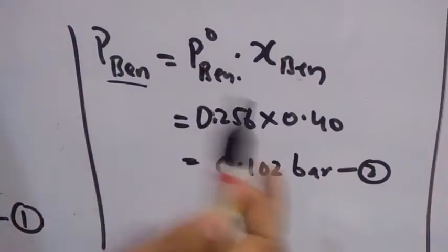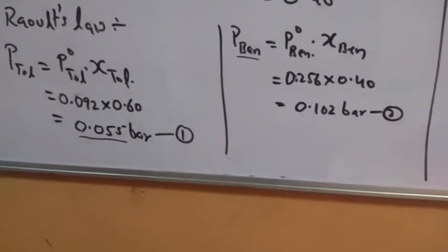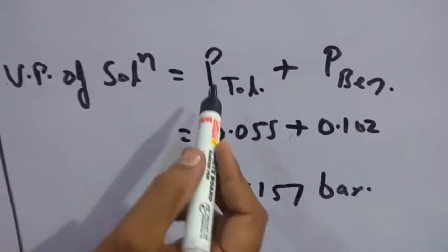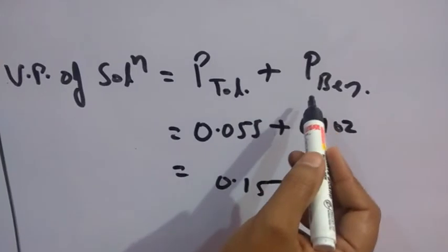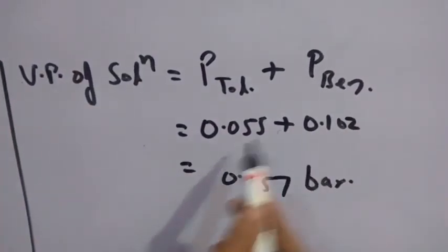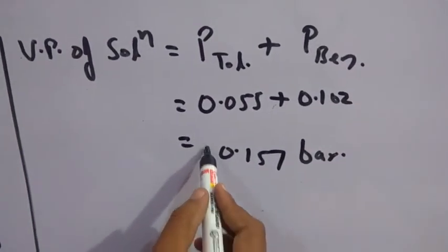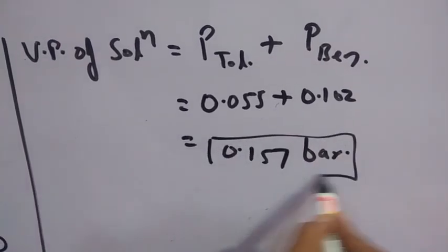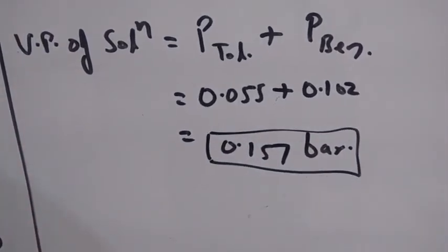These are the partial pressures of toluene and benzene in the solution. Using Dalton's Law, the total vapor pressure of the solution equals partial vapor pressure of toluene plus partial vapor pressure of benzene. Adding the values: 0.055 + 0.102 = 0.157 bar. Please practice the numericals from your books. Thank you.